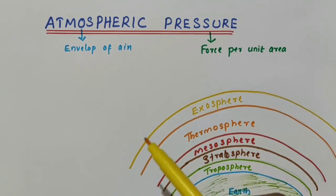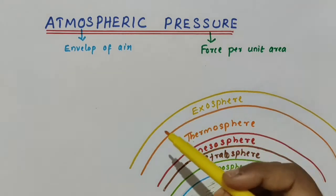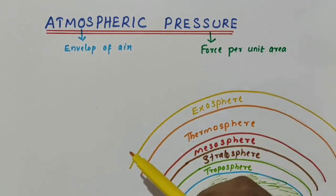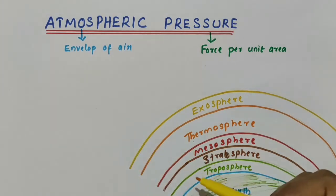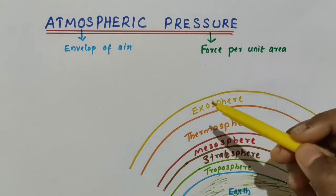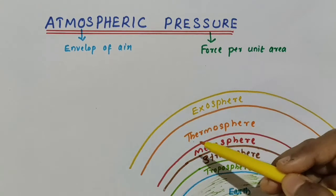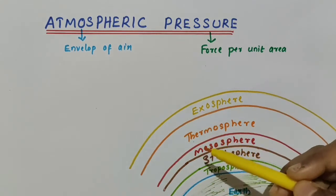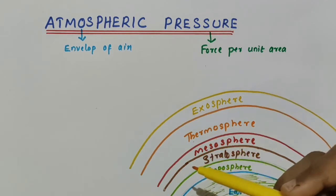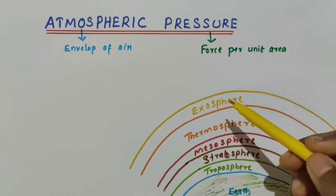You might have heard about nose bleeding on high mountains or at high altitude regions. The reason is that atmospheric pressure decreases as we go up. So at high altitudes, the blood pressure inside our body is more than the atmospheric pressure, which forces the blood to flow out through openings like the nose — so we experience nose bleeding.